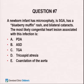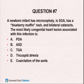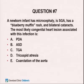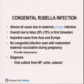Question 7: A newborn has microcephaly, SGA, a blueberry muffin rash, and bilateral cataracts. What's the most likely congenital heart lesion? This is congenital rubella. The most common heart lesion is a PDA; pulmonic stenosis is the next most common.